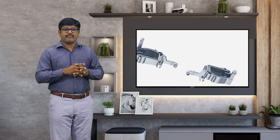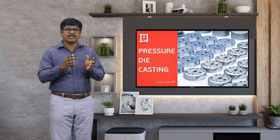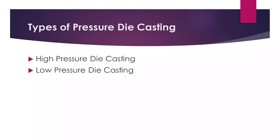After the solidification process, we remove or extract the casted product from the mold cavity. This is the regular procedure in pressure die casting. Depending upon the pressure used, there are two types: high pressure die casting and low pressure die casting.